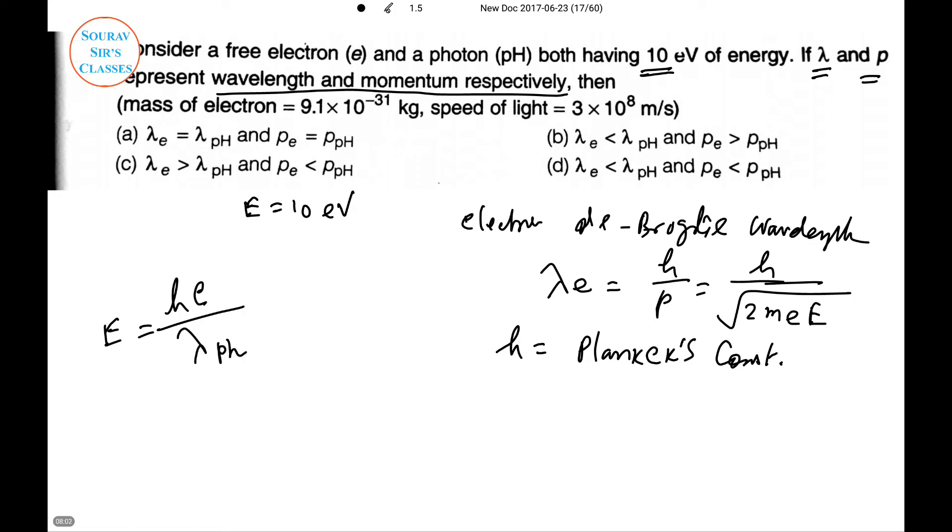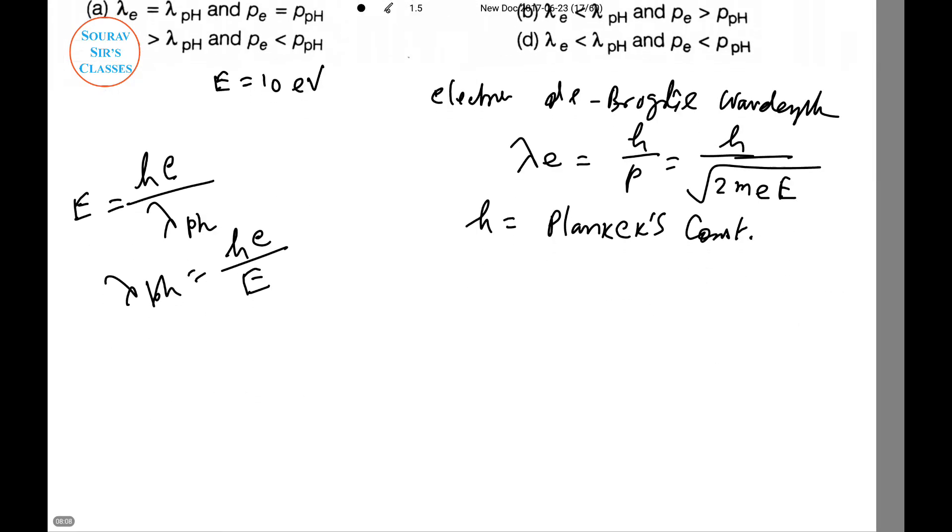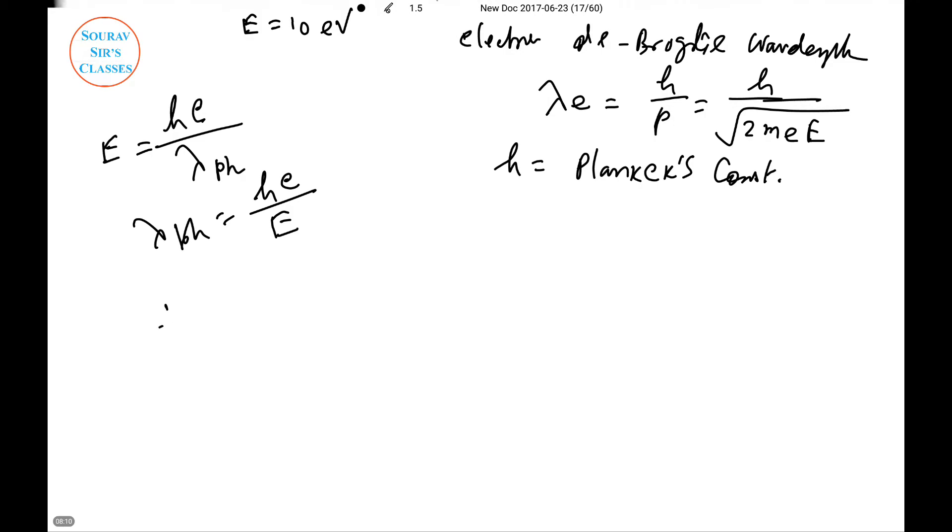For a photon, energy is given by E = hc/λph, so λph = hc/E. We can write λe/λph = [h/(2√(meE))] × (E/hc).